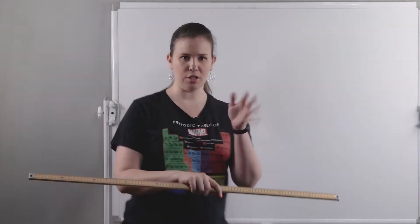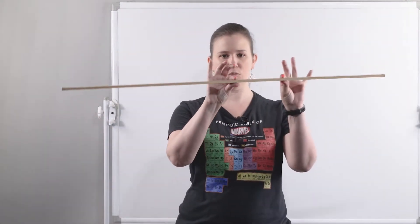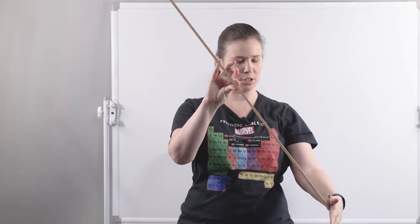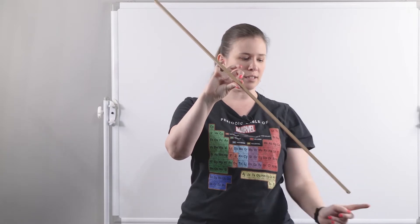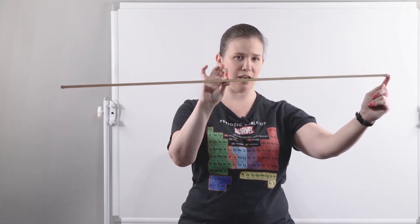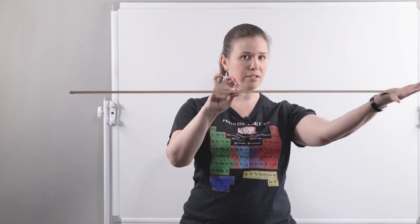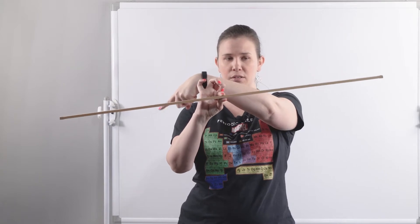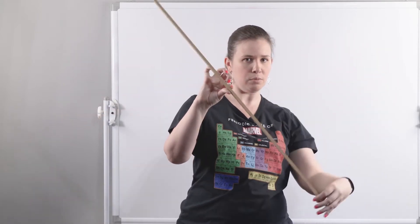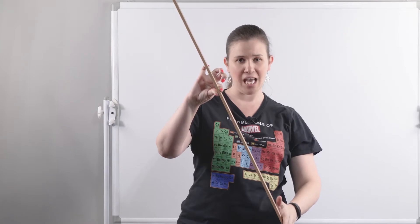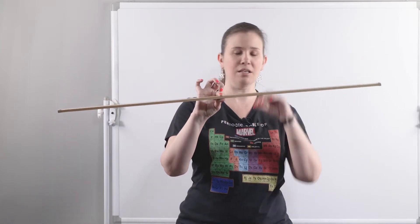Let me give you a non-chemistry demo. Say my ruler or yardstick here is at equilibrium. If I stress out the system by pushing down on this side, Le Chatelier's principle says the system will counteract that exact effect — if I push down on this side, the system will then push up on that side. Le Chatelier's principle focuses specifically on undoing the stress that was caused. It'll tell you in the problems what the stressor was, and you have to say how to fix it.